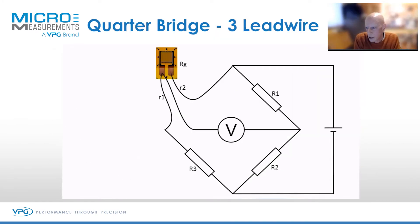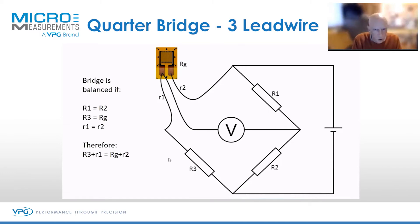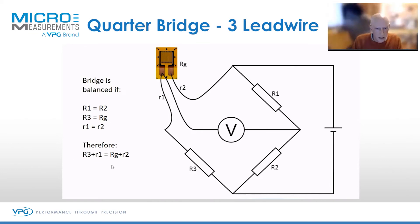For general stress analysis we use a quarter bridge, where one of the four resistors is a strain gauge and the other three are backing instrument resistors. R1 and R2 — if they're the same value, this point is at zero. R3, often called the dummy resistor, must match the strain gauge resistance RG for balance. Also, the lead wire resistances r1 and r2, if equal, keep the bridge balanced.